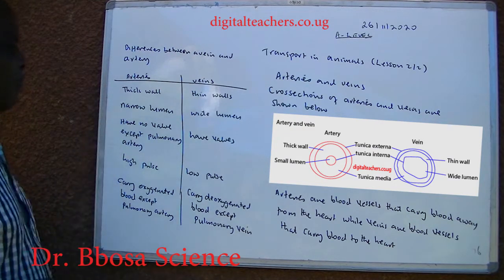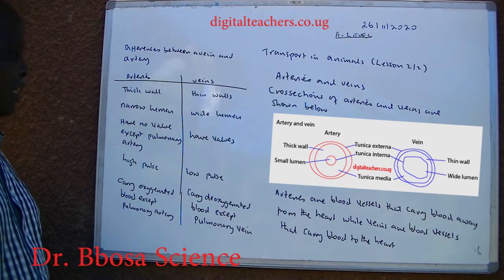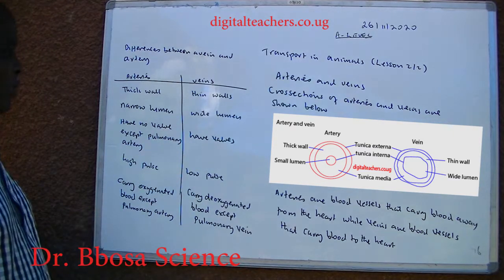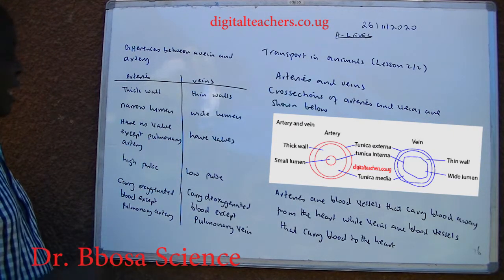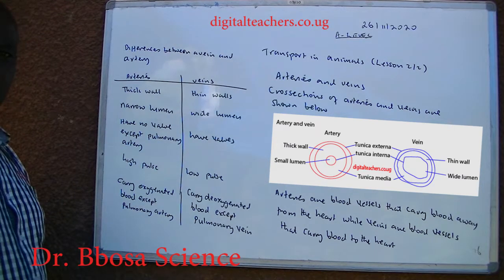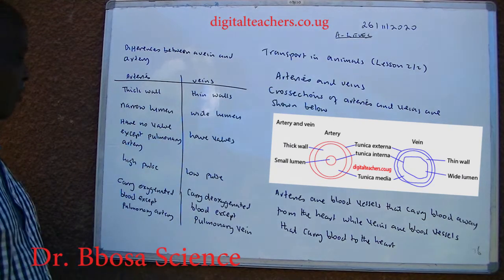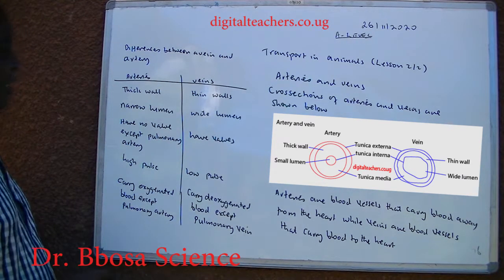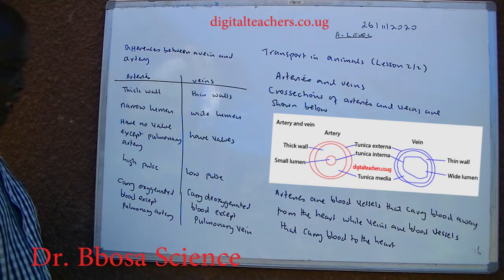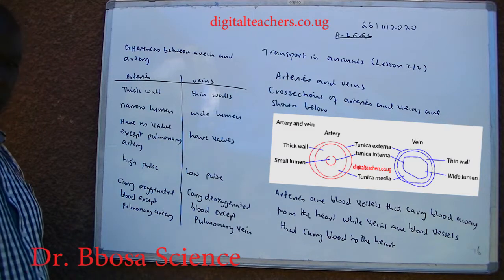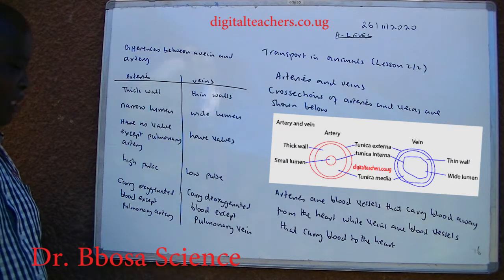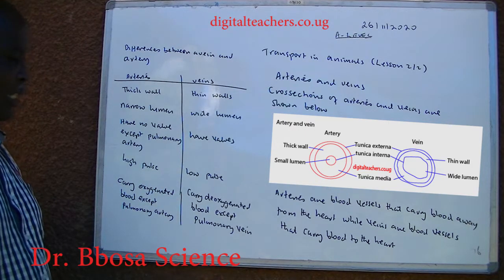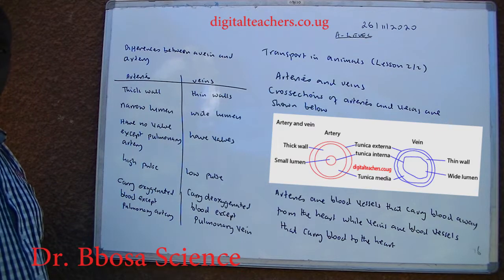Arteries have no valves, except pulmonary arteries. Veins have valves. Arteries have high pulse; veins have low pulse. Arteries carry oxygenated blood, except pulmonary arteries. Veins carry deoxygenated blood, except pulmonary veins.